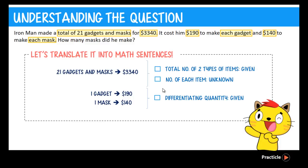We are also given this thing known as the differentiating quantity. What do I mean by the differentiating quantity? It's something whereby you can compare the two items equally. Here we are able to compare the gadget and the mask using the same units, which is how much each of them cost, in dollars. And this will be very useful to us, as you will see later.